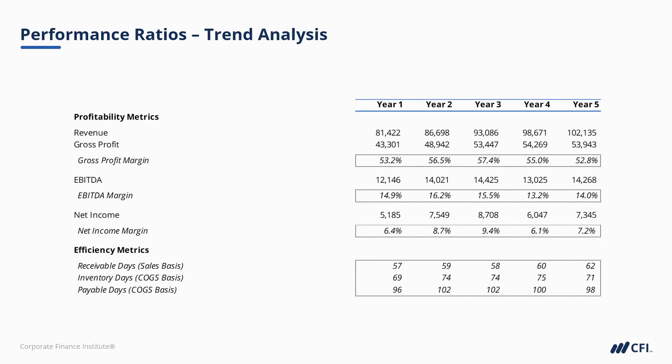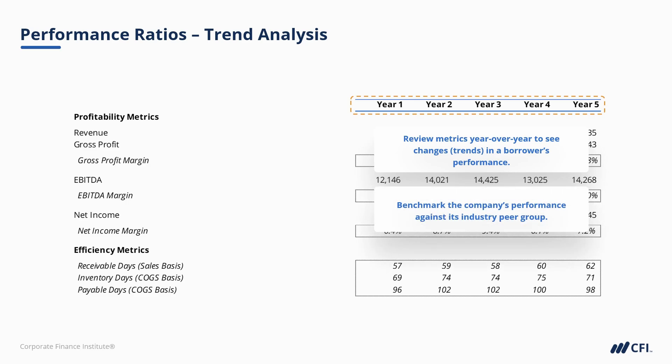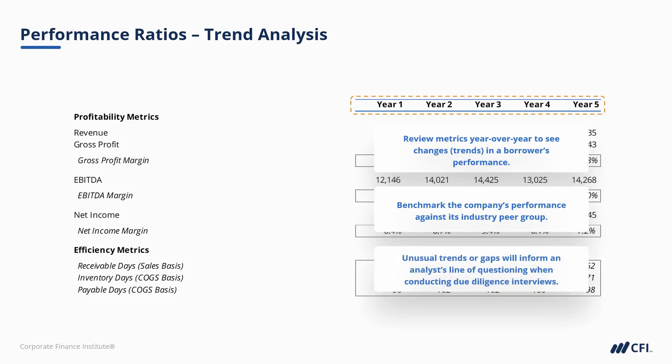Once we calculate these metrics, we need to understand their context. One way to accomplish this is through trend analysis, where we look at the metrics year over year to understand if the borrower's performance and efficiency are improving, declining, or remaining stable. We also use these metrics to benchmark the company's performance against its industry peer group — are they better than, worse than, or in line with industry averages? Unusual trends and relative performance gaps should help inform an analyst's line of questioning when conducting due diligence and management interviews.